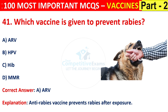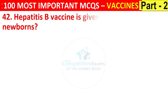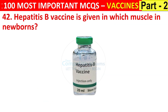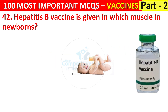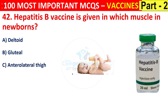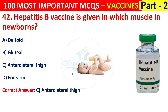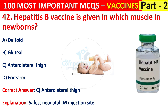Question number 42. Hepatitis B vaccine is given in which muscle in newborns? Options are deltoid muscle, gluteal muscle, anterolateral thigh, or forearm. The right answer is C, that is anterolateral thigh — the safest neonatal IM injection site.